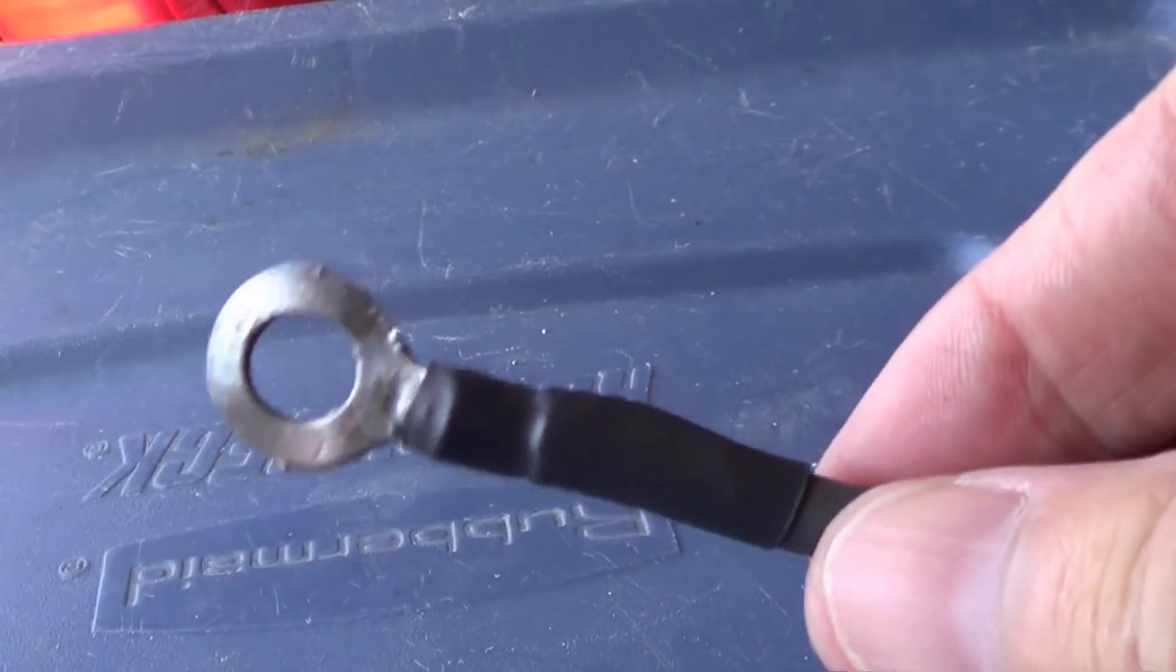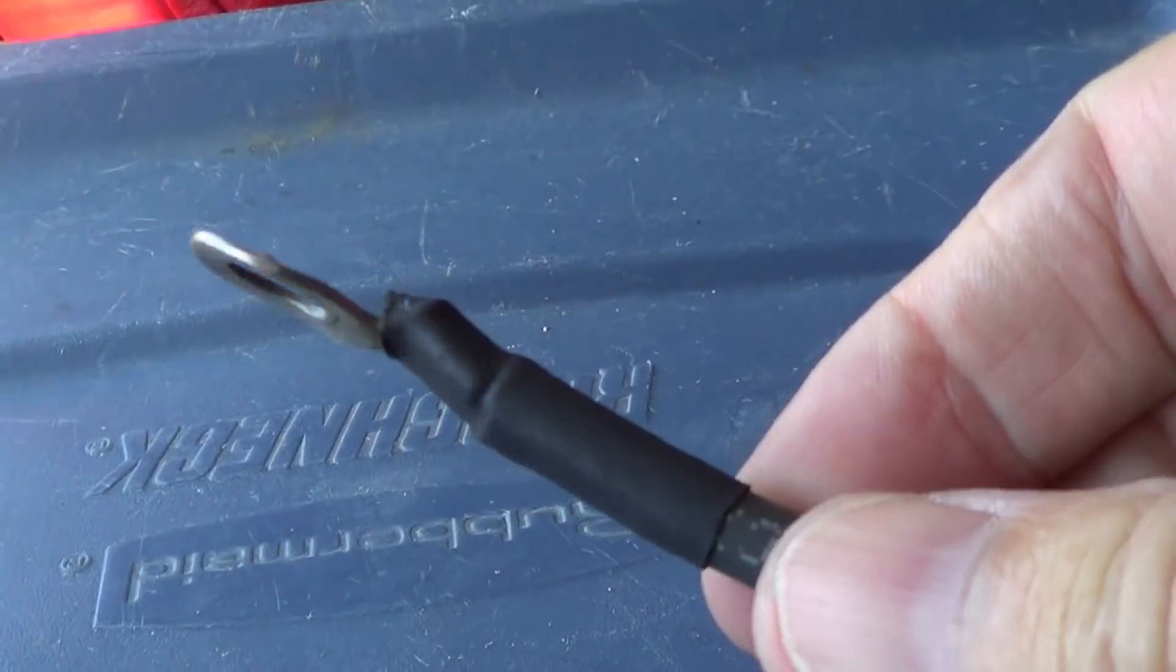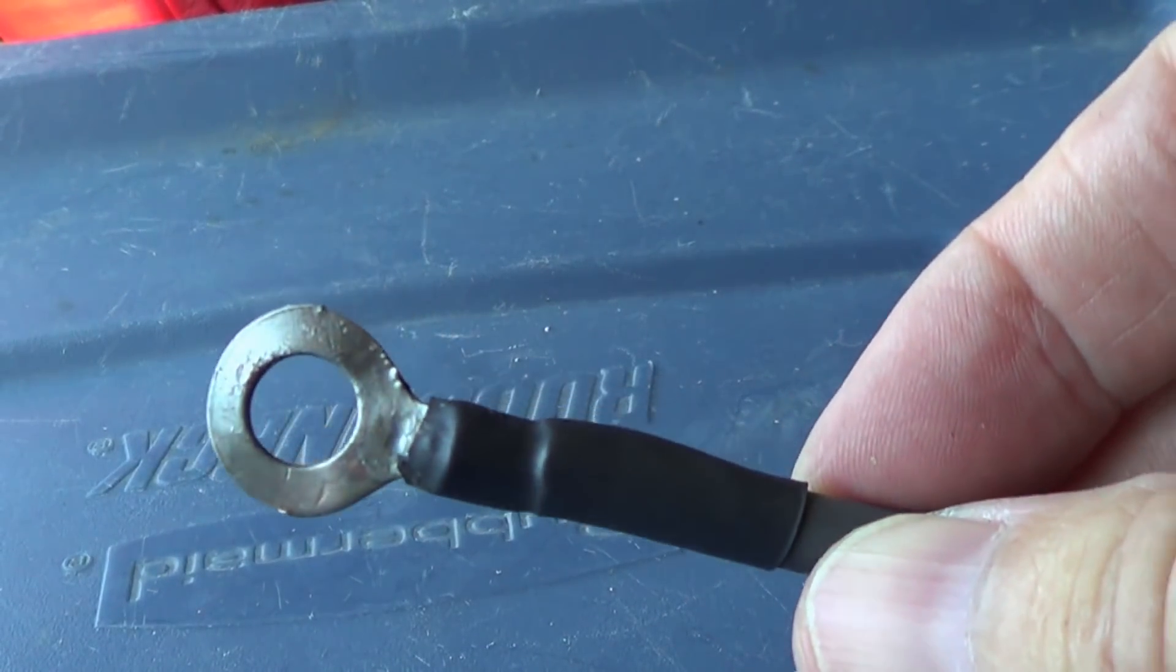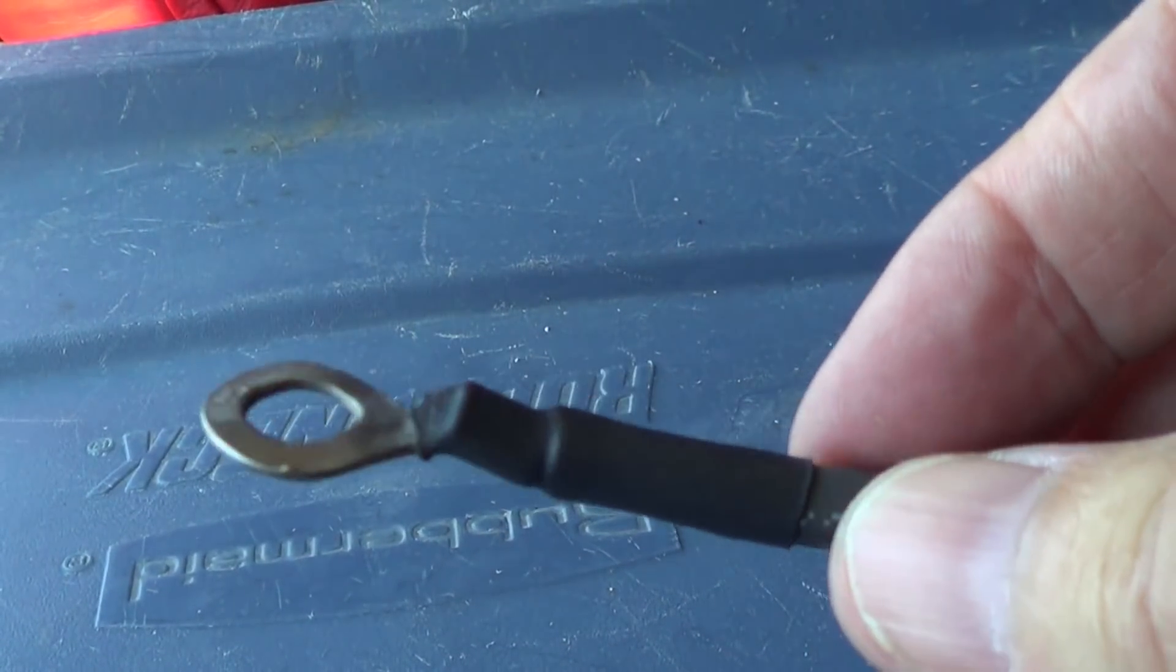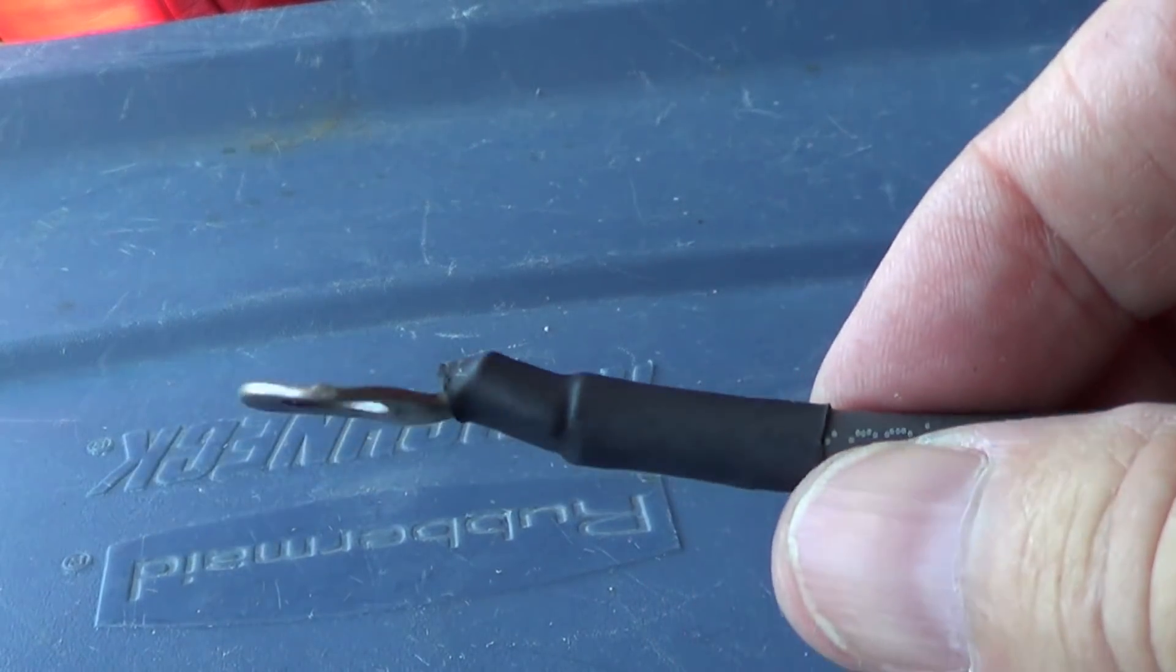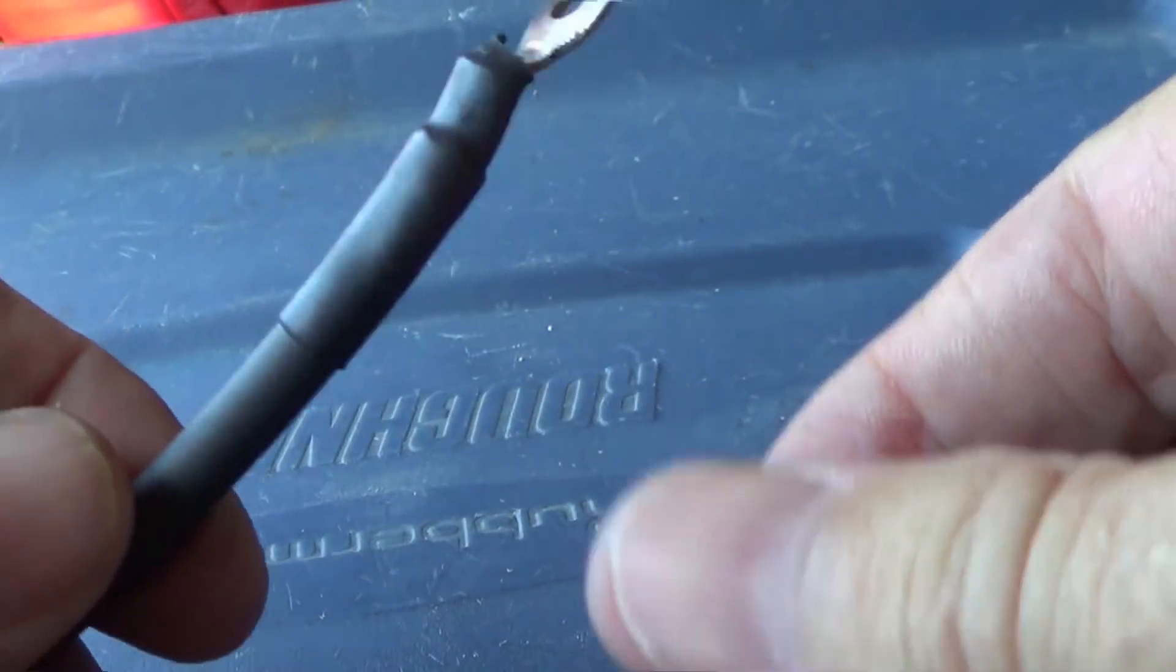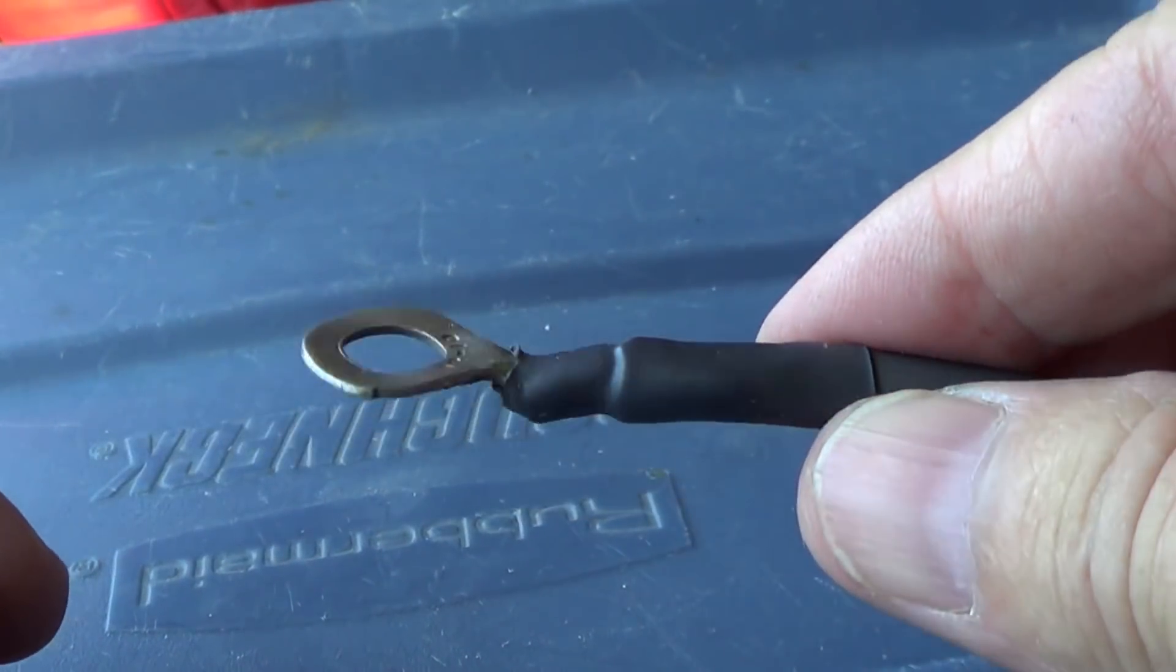There we go, not too bad. Crimped, soldered, and heat shrink tubing on it. Clean her all up and should be ready to go, be a good connection.